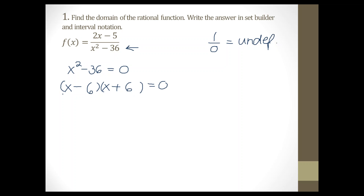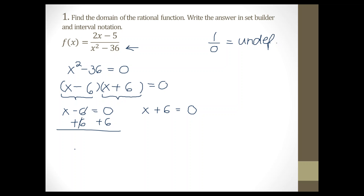To factor the difference of two perfect squares, you write an x and an x, you need a negative and a positive sign — it doesn't matter which one goes first — and then the square root of 36 is 6 and 6, all equal to zero. Now we take each individual part and set it equal to zero: x minus 6 equals zero, and x plus 6 equals zero.